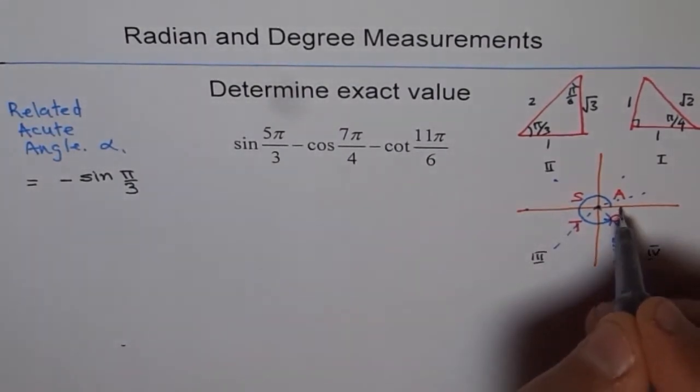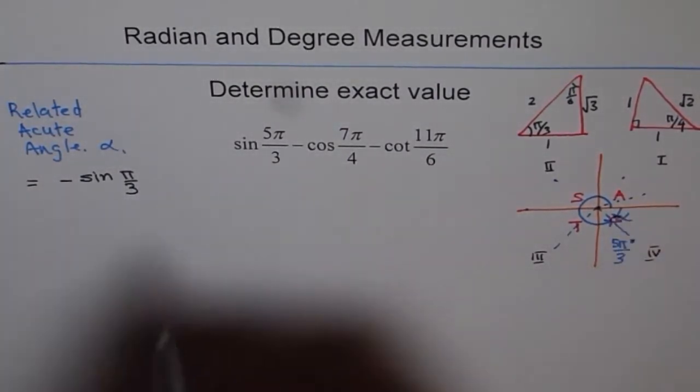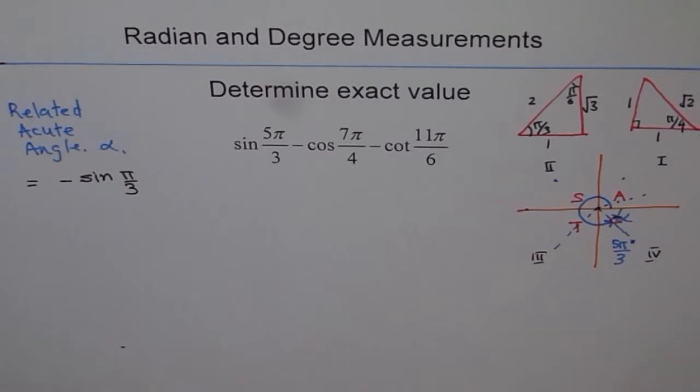So the idea here is to write in terms of related acute angle α. We are just checking this out. We say, well, α is this much. And since sine 5π/3 is in quadrant 4, it will be with negative sine.